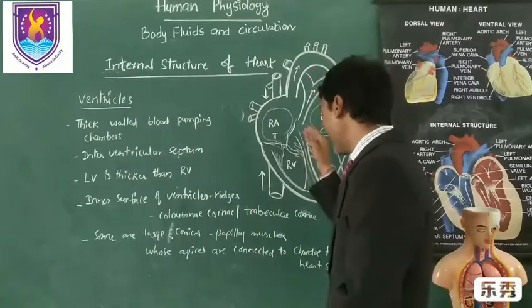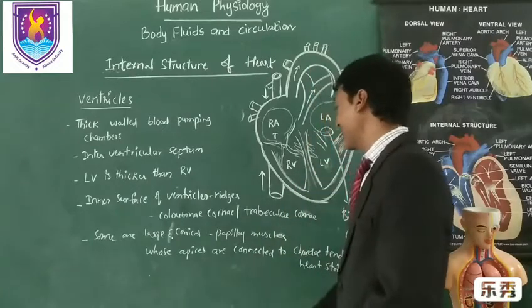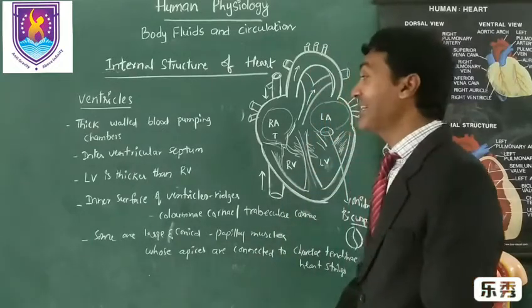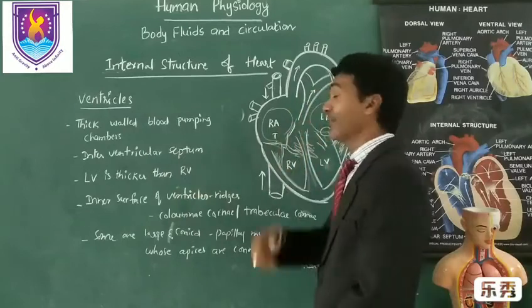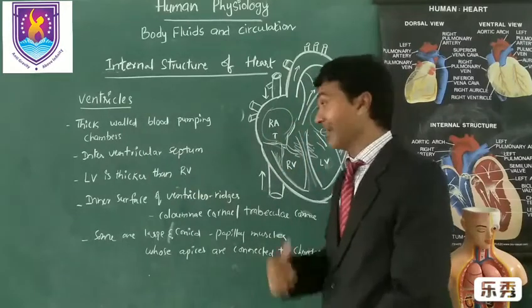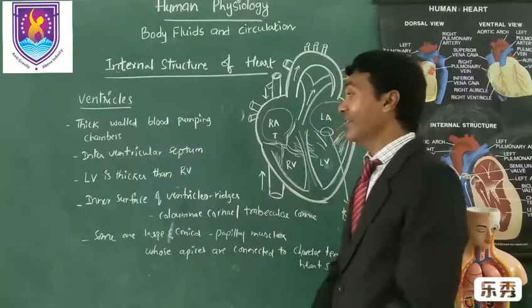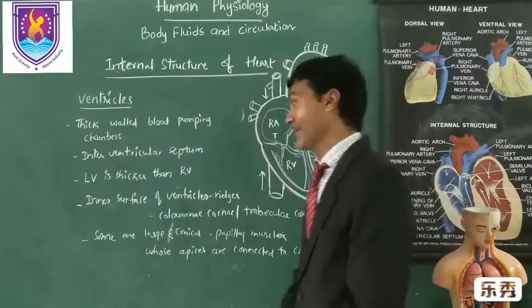Ventricles are separated by a septum known as interventricular septum — similar to the inter-atrial septum in the atria, this is called the interventricular septum.